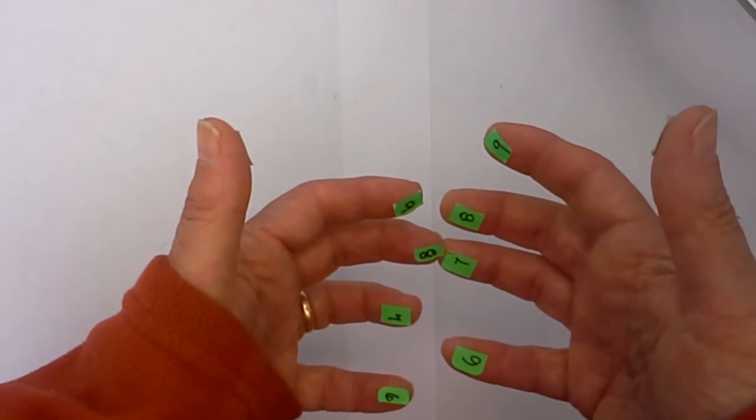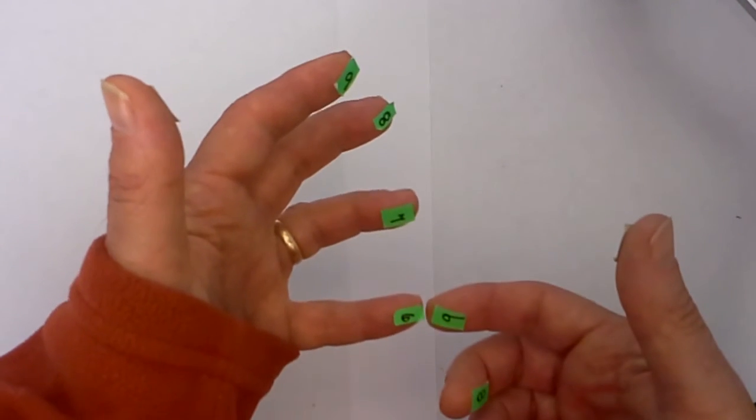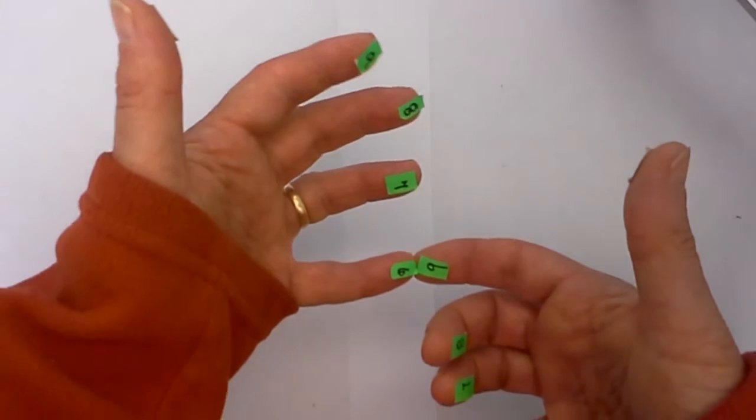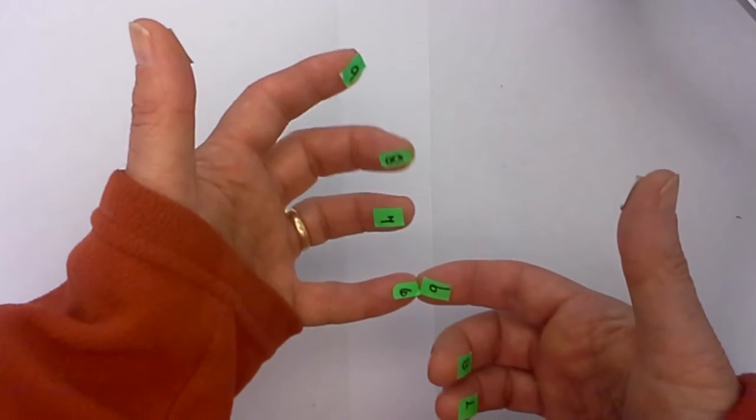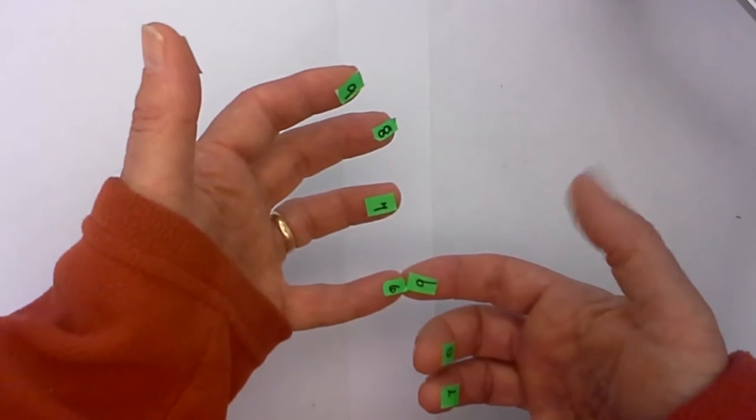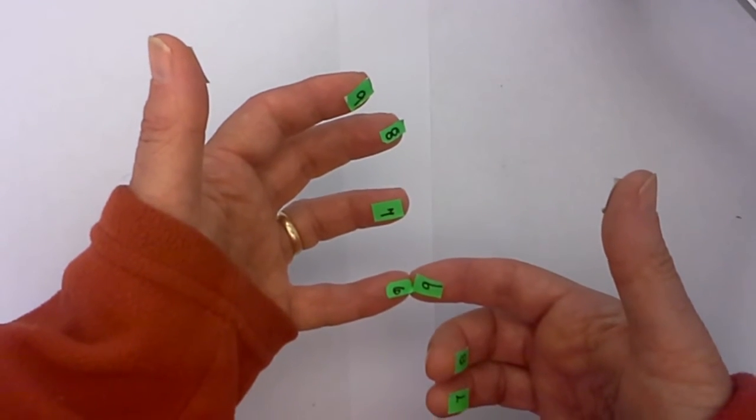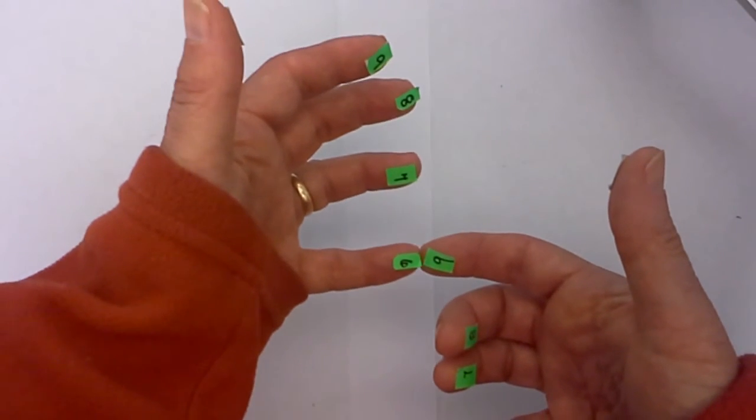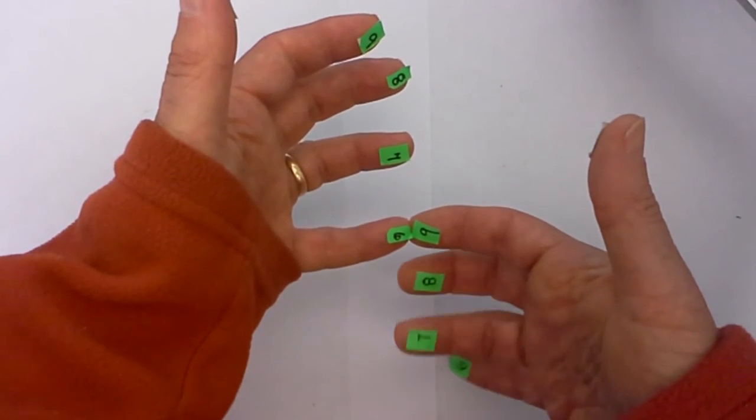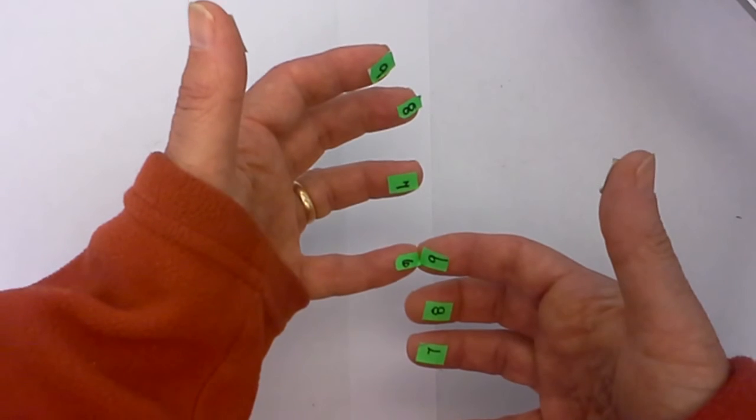And finally one more - 6 times 9. I have 4 fingers above on my left hand and 1 on the other side, so 4 times 1 is 4. Then I count the touching fingers - that's 50 plus 4.